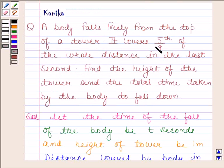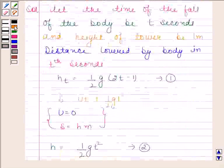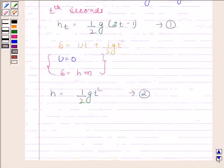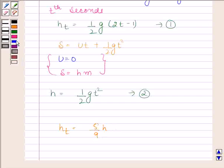Now consider the second statement of the question. It says that body covers 5 by 9 of the whole distance in the last second. So distance covered in tth second, that is h_t, is equal to 5 by 9 into h. This is according to given condition.